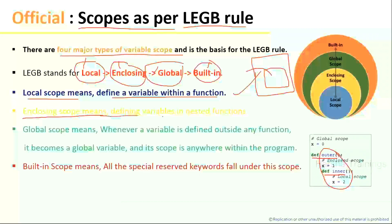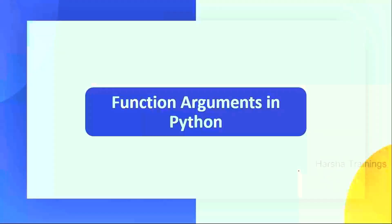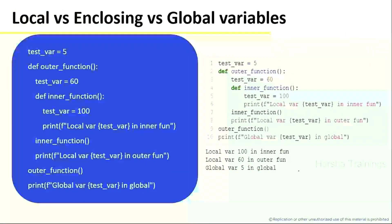Enclosing scope means defining variables in nested functions. Global means whenever a variable is defined outside a function, it becomes global and its scope is throughout the program. Built-in scope means all special reserved keywords fall under this scope.